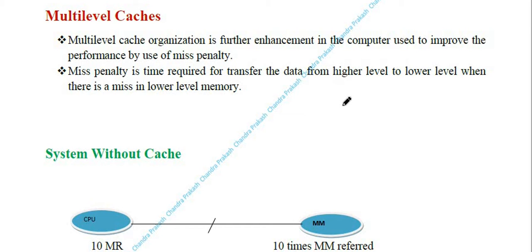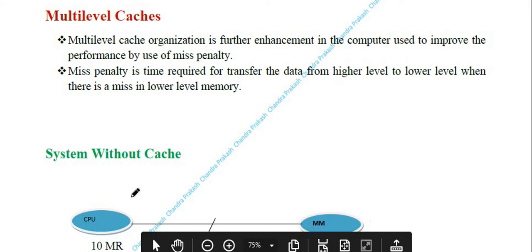Suppose there is a two-level organization with cache memory and main memory. In that case, cache memory is our lower-level memory and main memory is our higher-level memory. If there is a miss in cache memory, then we fetch the data from main memory. So miss penalty is the time required for transferring data from the higher-level memory to the lower-level memory.